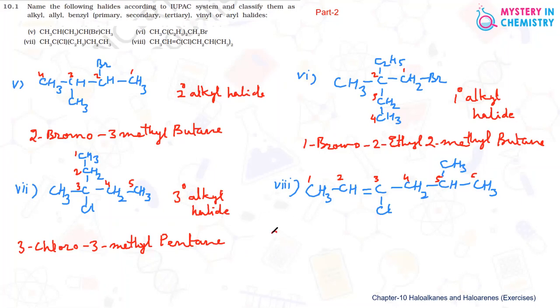Then 5-methyl. This methyl group which is at the fifth position is not in the longest chain, so we have to mention its position. Then hex-2-ene because the second carbon atom has a double bond. This is the complete name, and this CH-Cl group is actually known as vinyl group. So we can say it is vinyl halide.